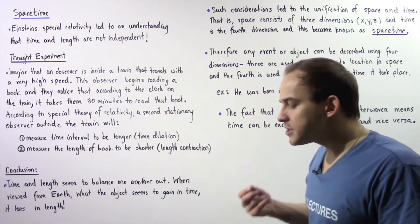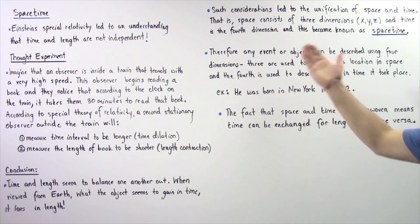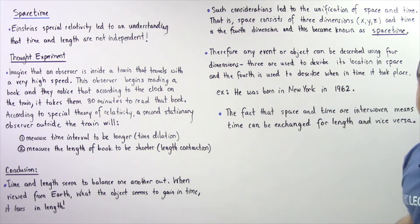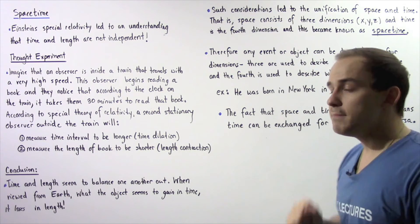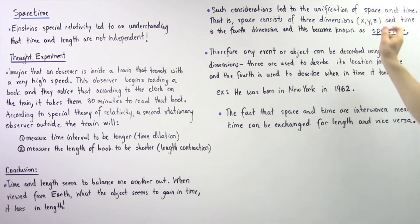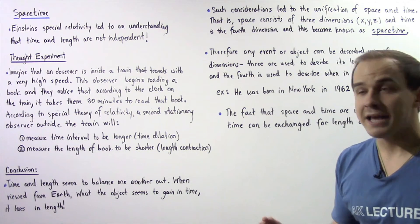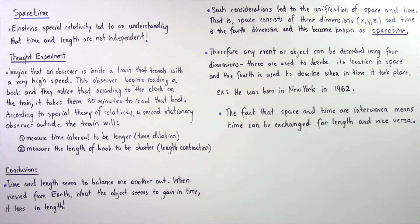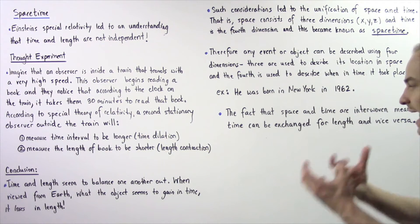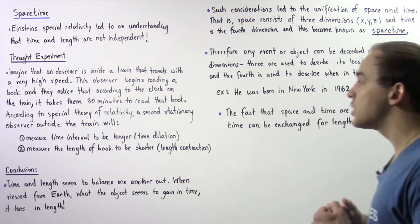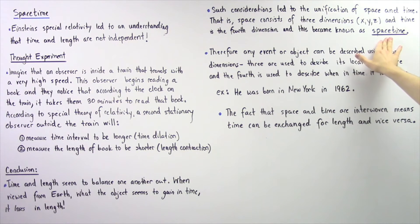These types of considerations basically lead to the unification of space and time. That is, space consists of three different dimensions—x, y, and z dimension—and time consists of one dimension, the fourth dimension. This unification of these dimensions became known as spacetime.